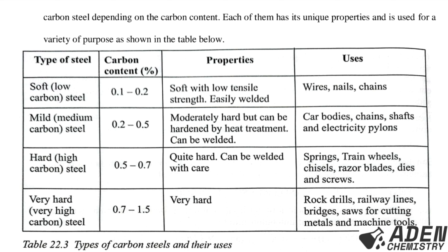Hard steel contains 0.5–0.7% carbon. Properties: quite hard, can be welded with care. Uses: springs, train wheels, chisels, and razor blades. Very hard steel contains 0.7–1.5% carbon. Properties: very hard. Uses: rock drills, railway lines, tools for cutting metals, and machine tools.